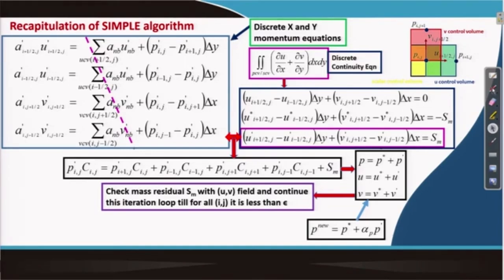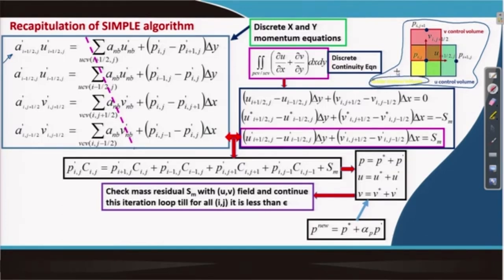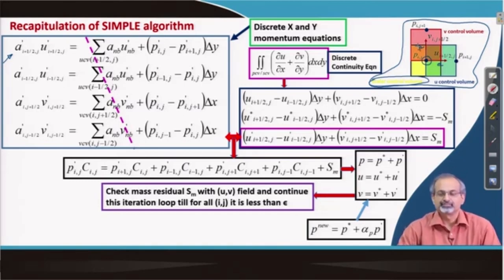We recall that we wrote down the discrete form of the x and y-momentum equations for the velocity components located on all 4 faces of the scalar control volume. Going back to the grid once more — this was the staggered grid arrangement. The central cell is the scalar control volume; the center locates p_ij, and we have u_{i+1/2,j} shifted to the east face of the cell, and on the north face is v_{i,j+1/2}.